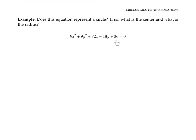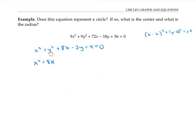This equation might not look like the equation of a circle, but it actually can be transformed to look like one — something of the form x minus h squared plus y minus k squared equals r squared. First, I'd like to get rid of the coefficients in front of the x squared and y squared, so I'm going to divide everything by nine. Next, I'll group the x terms together — x squared and eight x — and group the y terms together — y squared minus two y — and subtract the four over to the other side.